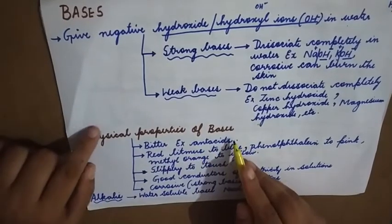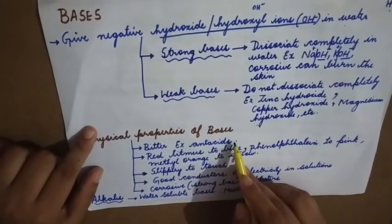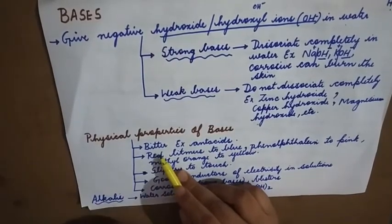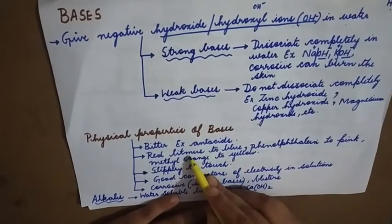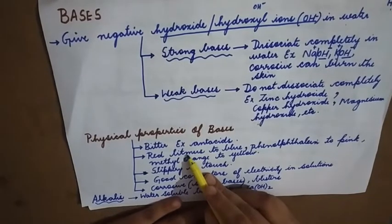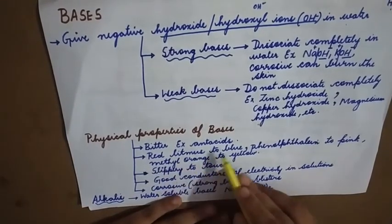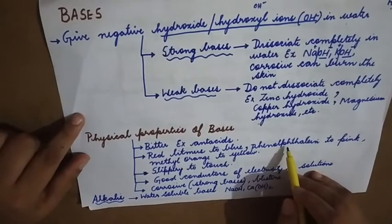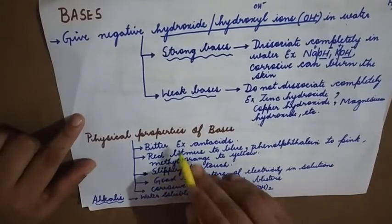Physical properties of bases: they are bitter in taste. For example, all antacids used to reduce acidity are bases and they are bitter in nature. Bases turn red litmus to blue — litmus is obtained from lichens and is an indicator. A solution is basic in nature if it turns red litmus to blue. Phenolphthalein is an indicator — if it changes to pink, then it is a base. Methyl orange is an indicator — if it changes to yellow, then it is a base.